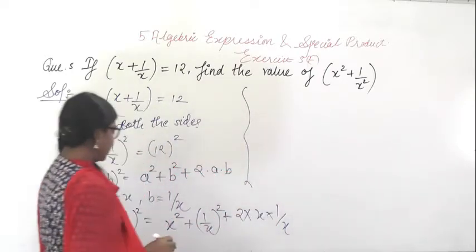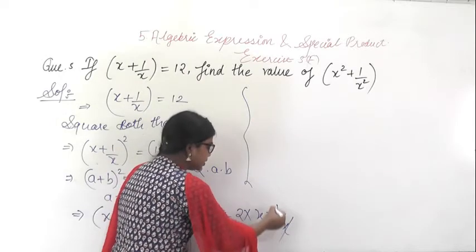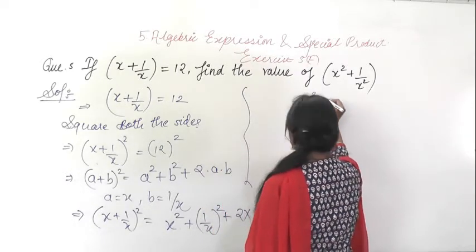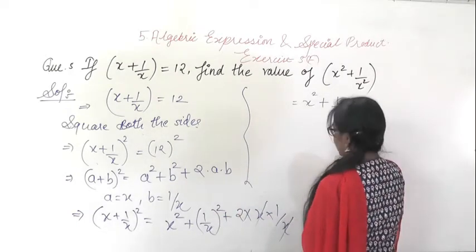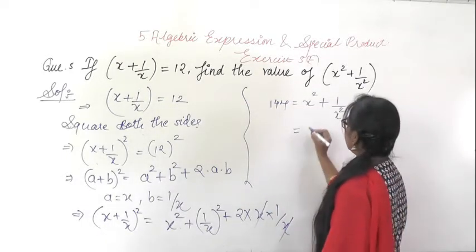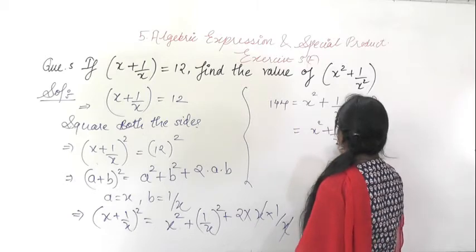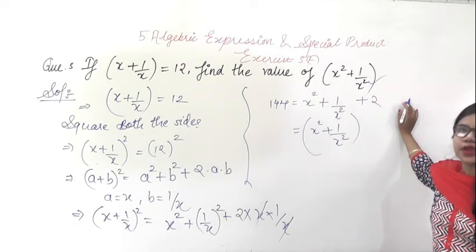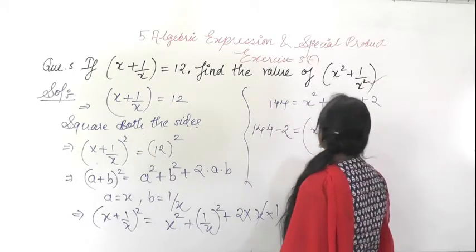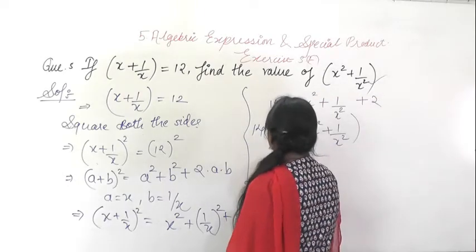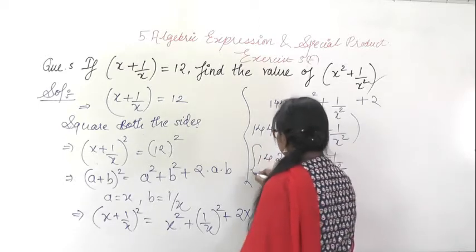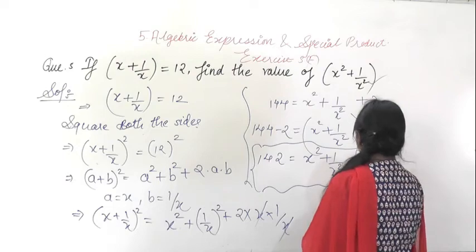On solving, x × (1/x) cancels, so you remain with x² + 1/x² + 2 = 12², and 12² = 144. So x² + 1/x² = 144 − 2 = 142. Therefore the value of x² + 1/x² is 142.